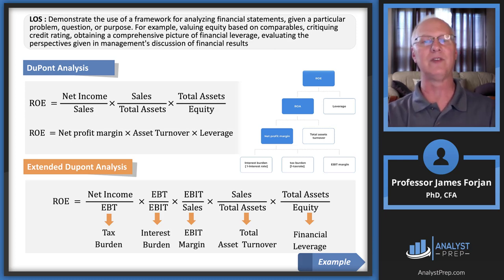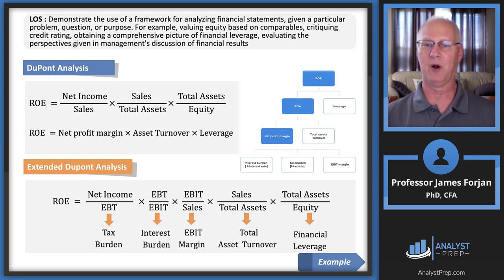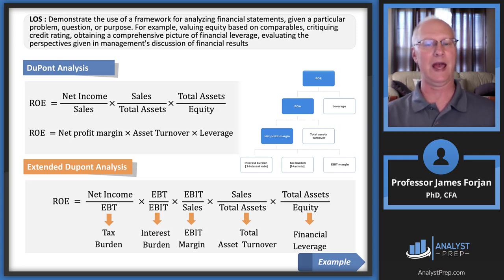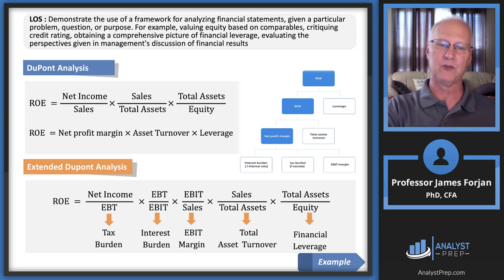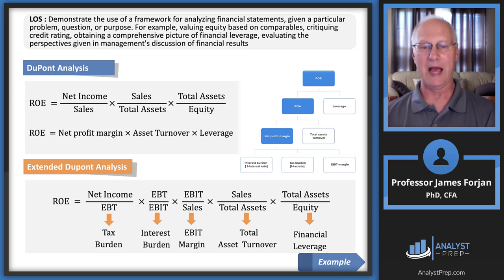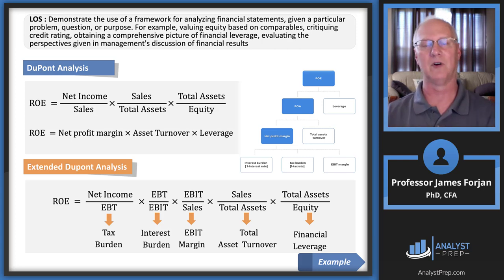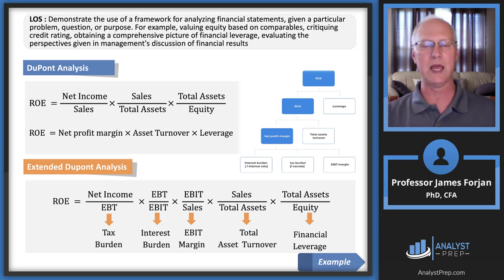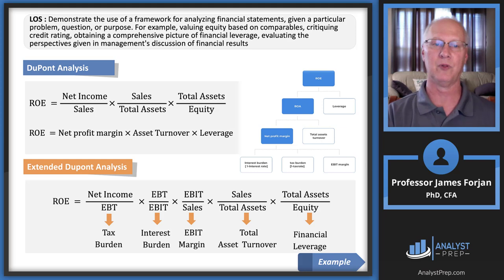The extended DuPont analysis adds the interest burden and the EBIT margin to the original three components, all within the tax environment. The denominators and numerators still cancel, so we still have net income over equity. But now we're adding in the fact that if a company issues bonds, it gets a subsidy by allowing interest payments to be an expense on the income statement. The question is whether the firm is tempted to be over-leveraged, supporting ROE just through leverage rather than through operations.